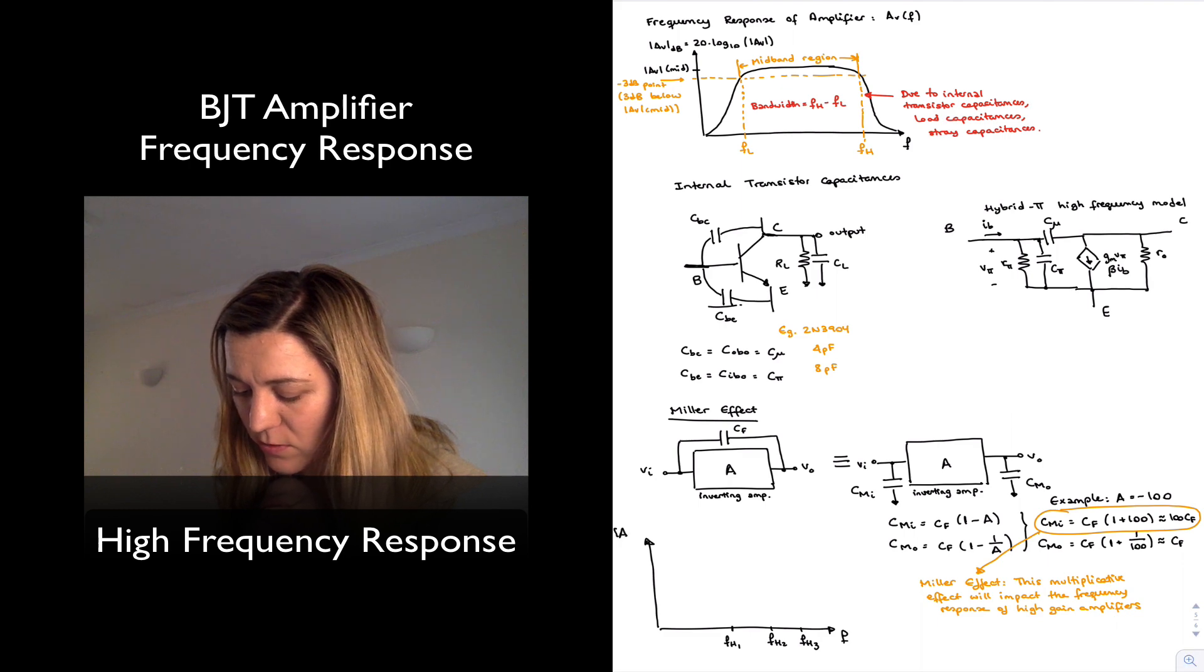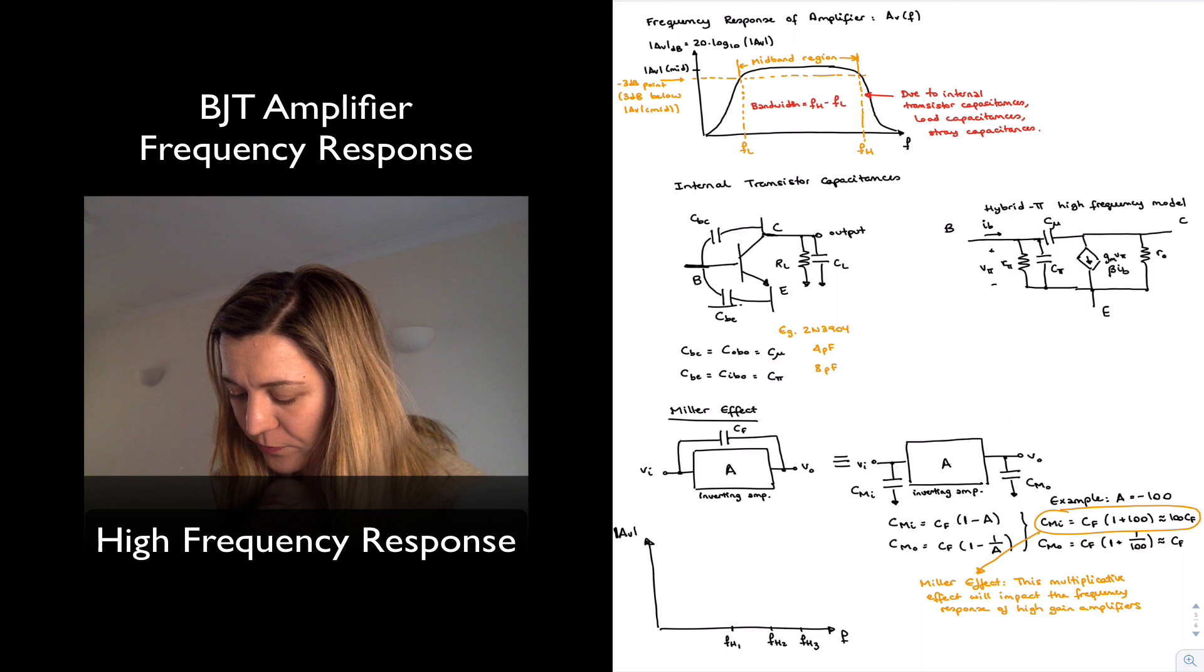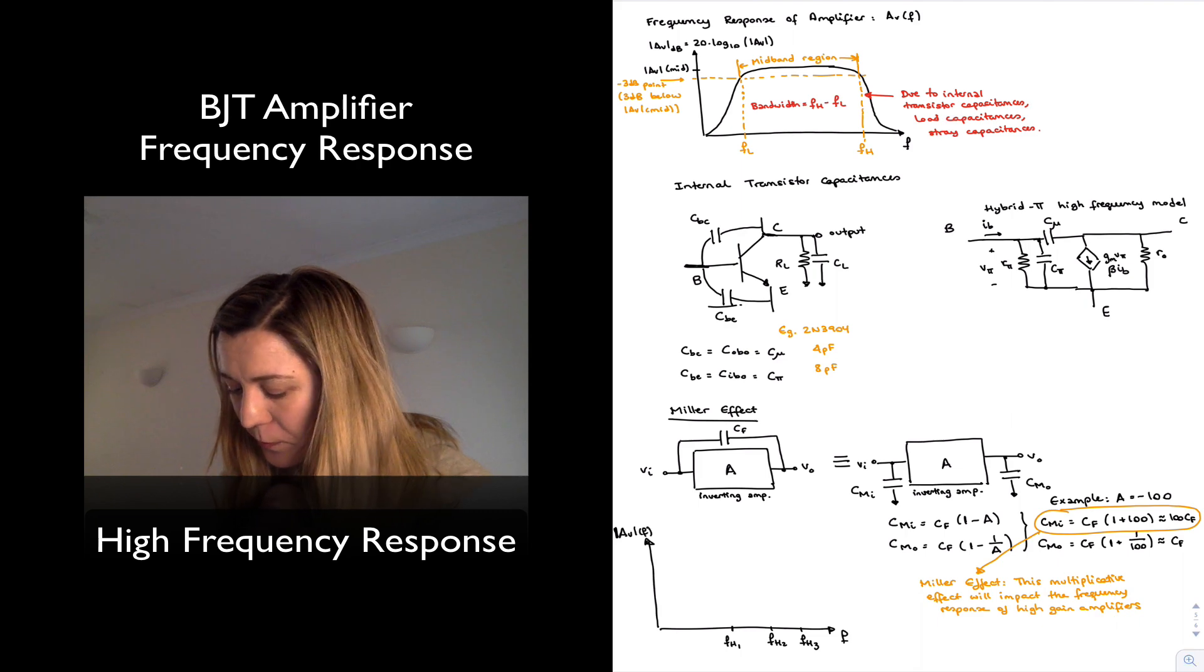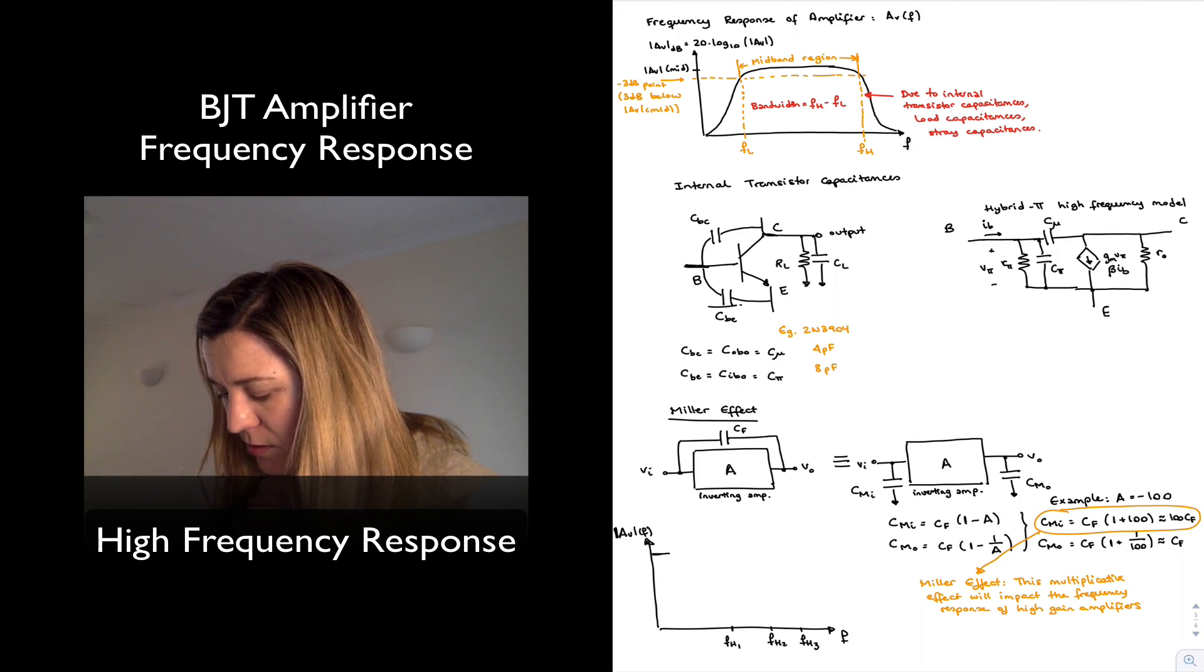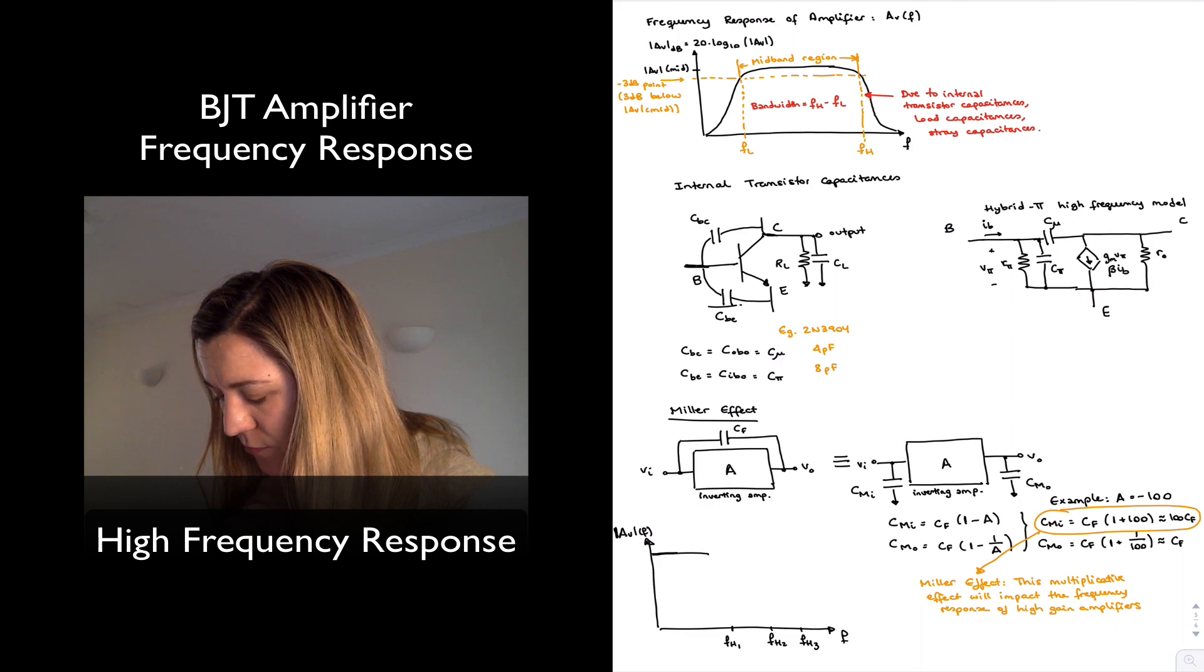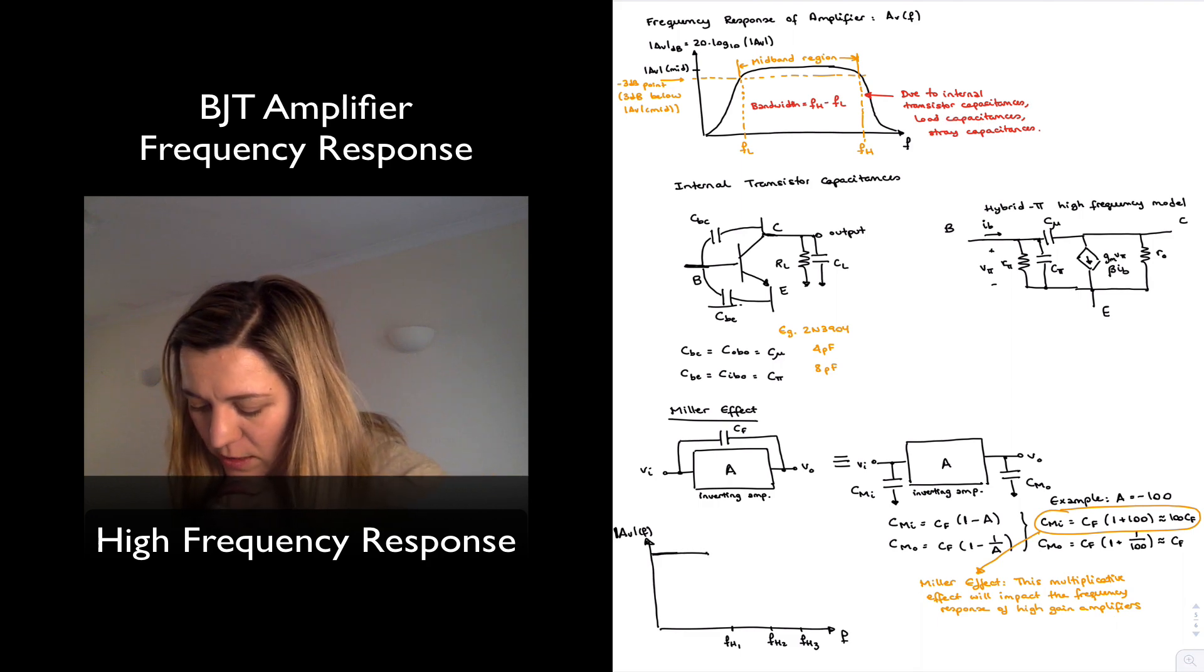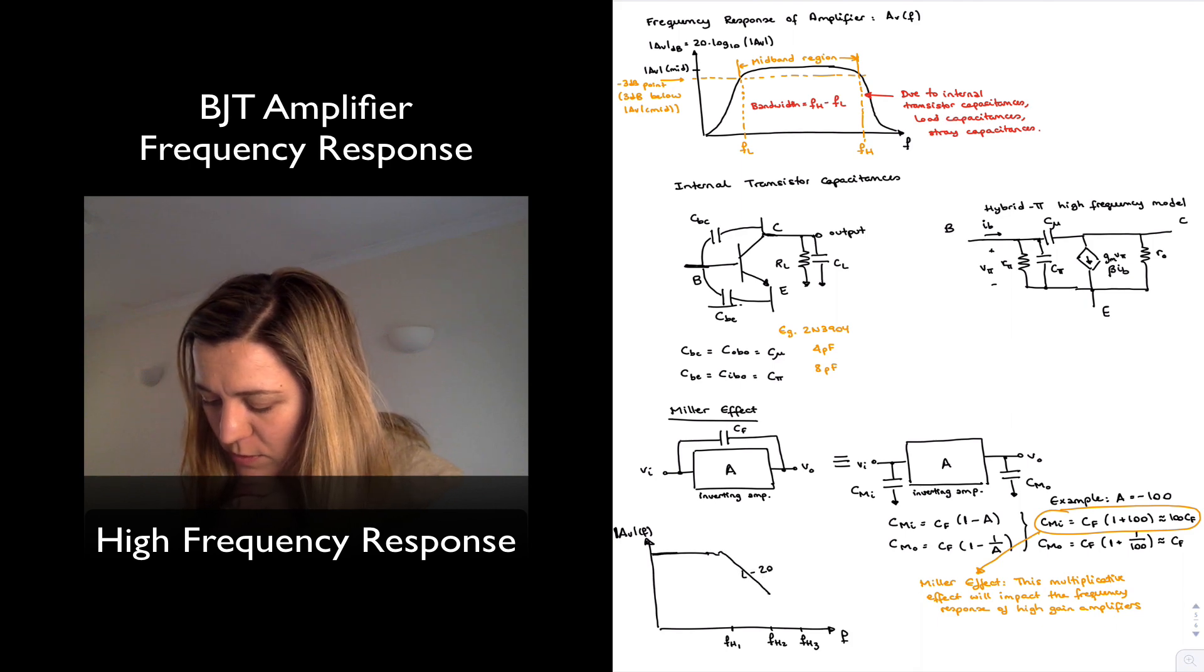And my gain, or the magnitude of my gain, as a function of frequency. Basically, I'm representing now, zooming into the high pass, or the high band portion there. What I will have is when I encounter my first pole, I'm going to start decreasing at a rate of negative 20 dB per decade.